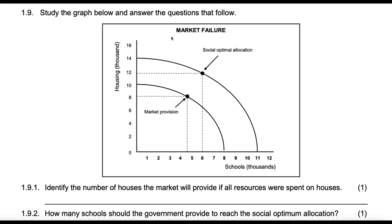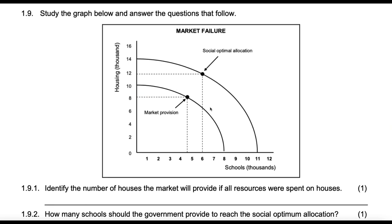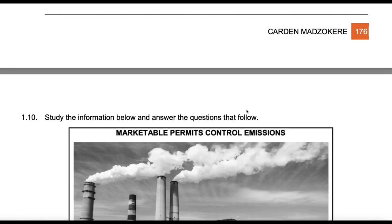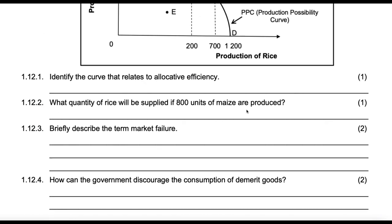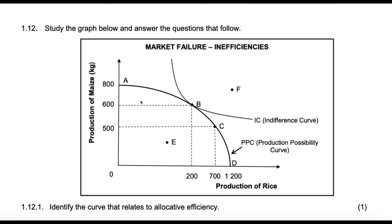If there was an indifference curve, it would be here. Let me run to one that has an indifference curve so you can see what I'm talking about. In this case we have a PPC and an indifference curve, and you can see point B would be the optimum. F is unattainable. E is productively and allocatively inefficient. B is ideal because allocatively it's efficient — production is along the indifference curve — and productively it's also efficient, with production along the PPC.